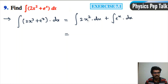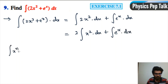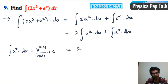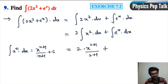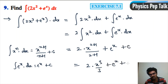Using the constant multiple rule, we get 2 times the integral of x squared plus the integral of e to the power of x with respect to x. Using the power rule, integral of x to the power of n is x to the power of n plus 1 divided by n plus 1 plus c. Therefore this is x to the power of 2 plus 1 divided by 2 plus 1. Plus the integral of e to the power of x, which equals e to the power of x. This is equal to 2 times x cubed divided by 3 plus e to the power of x plus the integral constant c. This is the required answer.